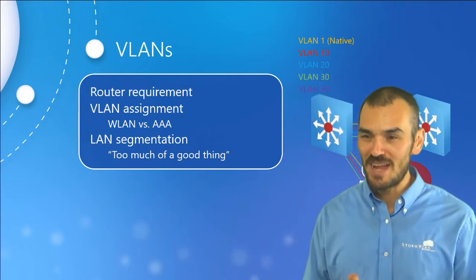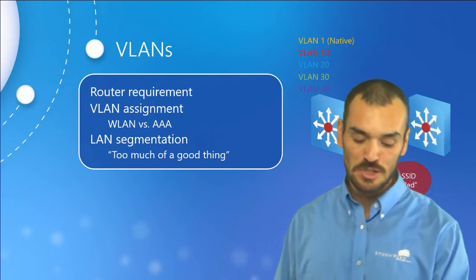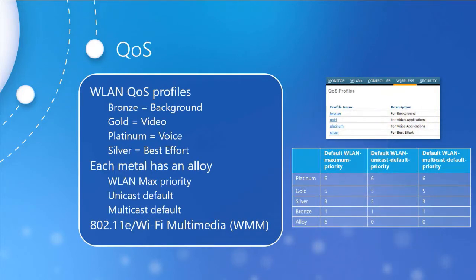Next is QoS. The short version: QoS manages network resources to achieve the desired or required network performance. In the early days we were happy just to get wireless devices connected; now we expect wired performance on wireless networks. There are two ways to configure QoS on a wireless LAN controller: metal profiles, which use a fixed priority value for all traffic within a wireless LAN, and alloy QoS, which defines three priority values — maximum unicast, default, and multicast default.